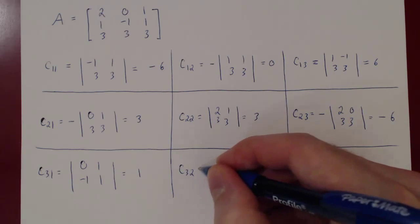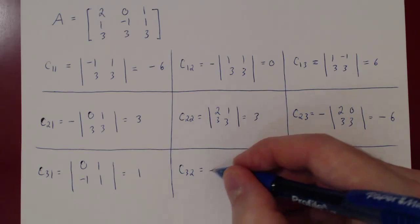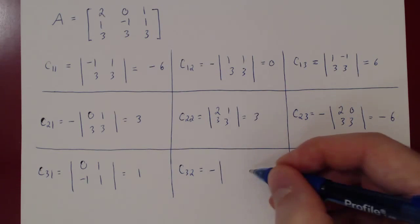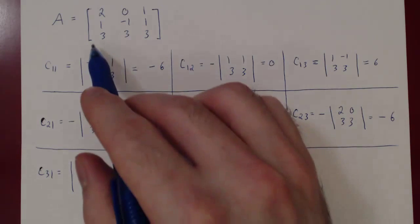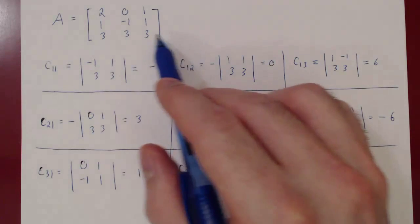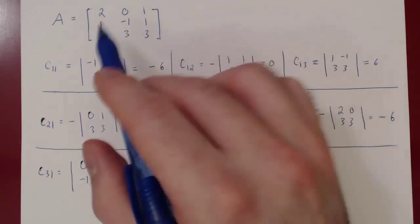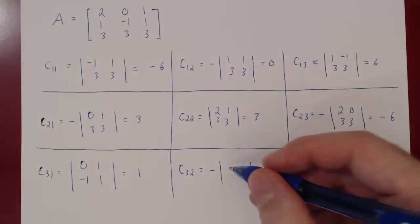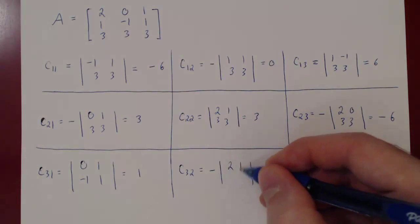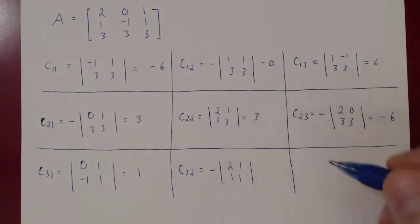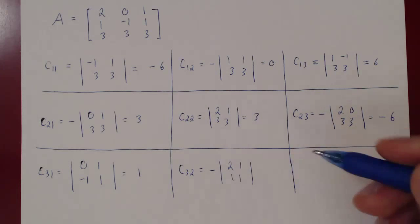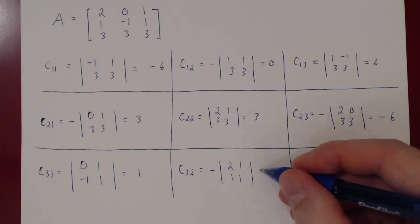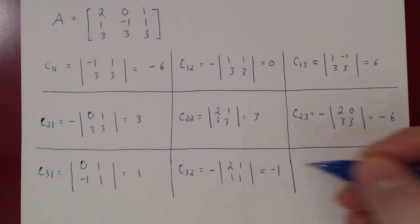C32: 3 plus 2 is 5, which is odd, so we do get a negative sign. We delete row 3, column 2, and you get the matrix 2, 1, 1, 1. The determinant is 2 minus 1, which is 1, and the negative of that is negative 1.